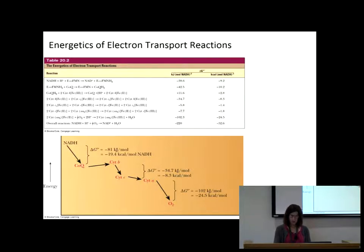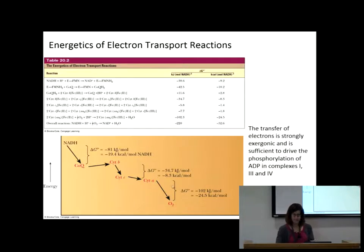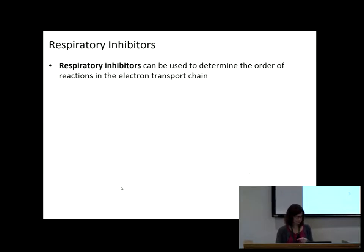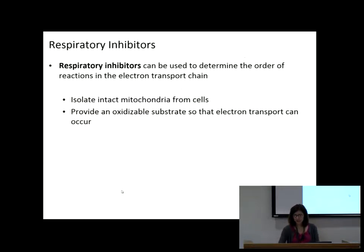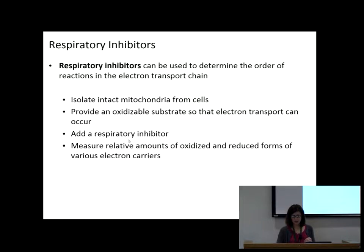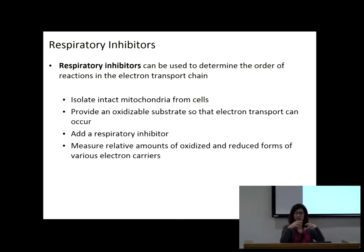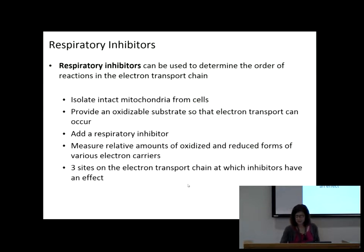Before we take a break — how did we figure out that it goes from NADH to FMN to iron-sulfur centers to coenzyme Q? The way we did that is to use respiratory inhibitors. Graduate students isolated mitochondria, provided something that allowed electron transport to occur, added a molecule, and then observed what built up. If certain species accumulated, they knew those carriers were connected. They found three sites where inhibitors had an effect.